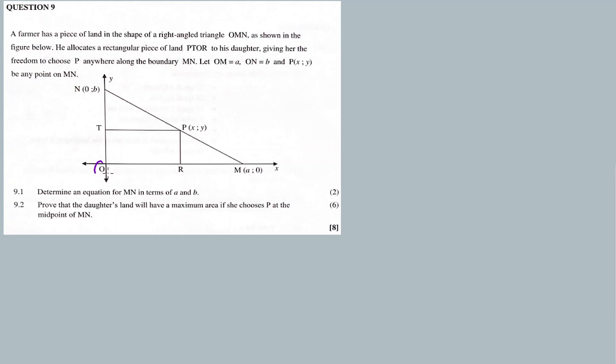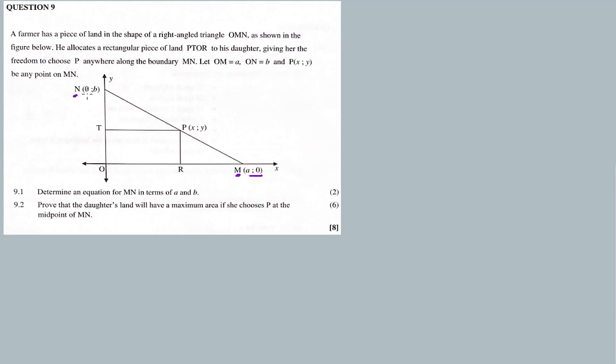Let O-M be equal to A. This distance from O to M is actually A. That's why point M has the coordinate (A, 0). Let O-N equal B — that's why I see N as (0, B), and P is point (x, y) on any point on M-N.